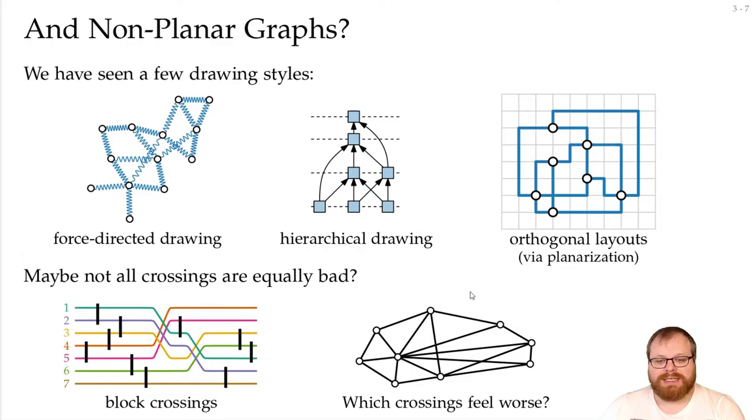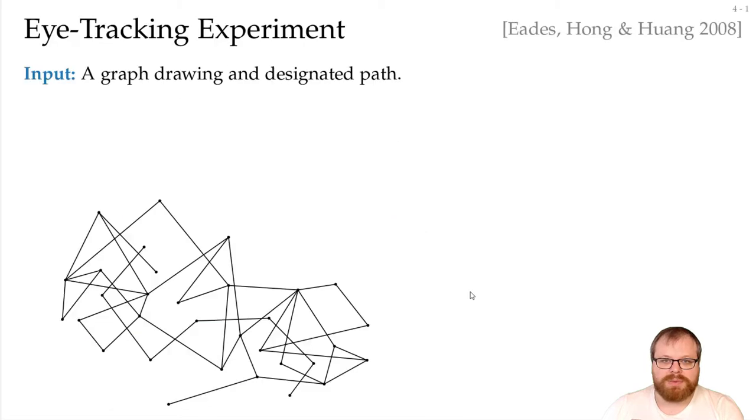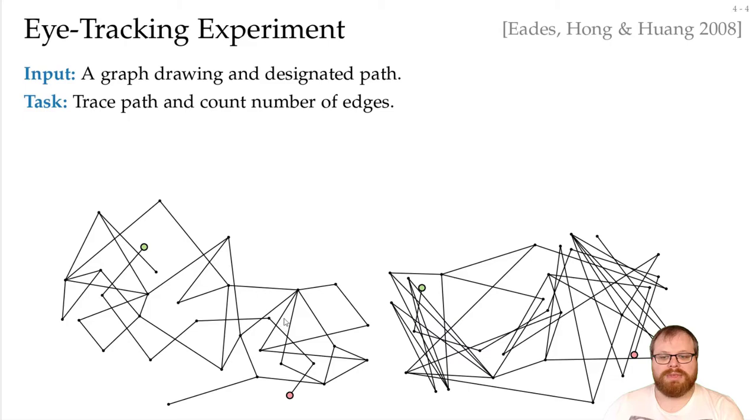There have been a lot of studies and experiments for this, and there's one I want to point out by Yitz Hong and Wong from 2008. There they did some eye-tracking experiments. In the input we had a graph drawing and some designated paths like this one here. And the task for the users was to trace the path and count the number of edges. Here it seems to be quite easy. We have one, two, three, four, five, six.